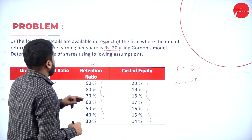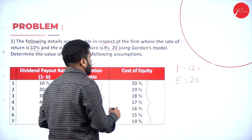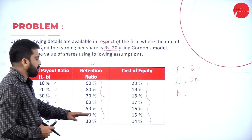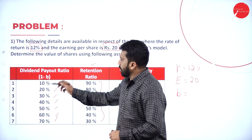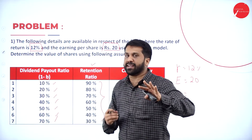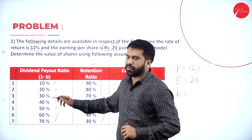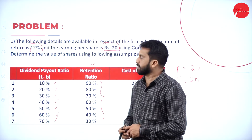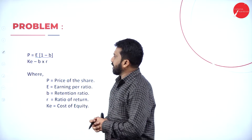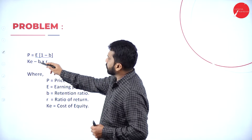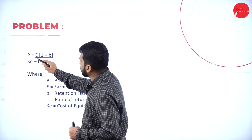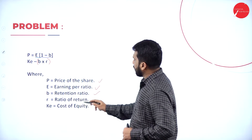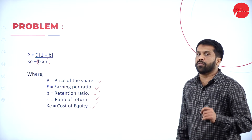After this, cost of equity is given. Your retention, we call it B. So we have 90%, 80%, 70%, 60%, 50%, 40%, and 30%. Out of 100%, if you provided 10% as dividend, the balance retention is 90%. 100% minus the dividend payout gives you the retention balance. The formula is: P = E(1 − B) / (Ke − B × r), where P is the price of the share, E is earnings per share, B is the retention ratio, r is the rate of return, and Ke is the cost of equity.